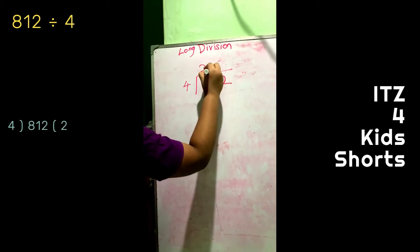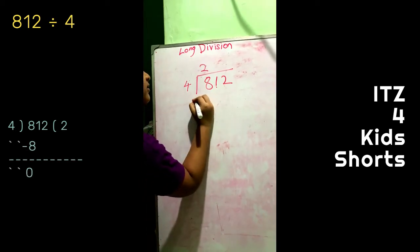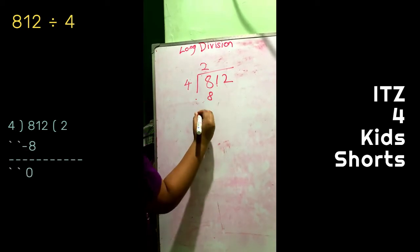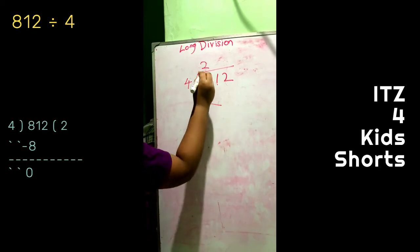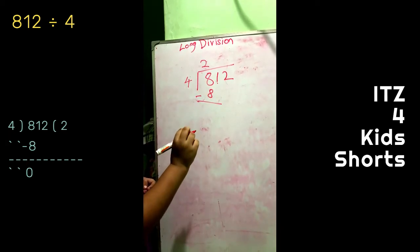Put 2 in the quotient place and put 8 here. Now you have to subtract these both numbers. 8 minus 8 is 0.